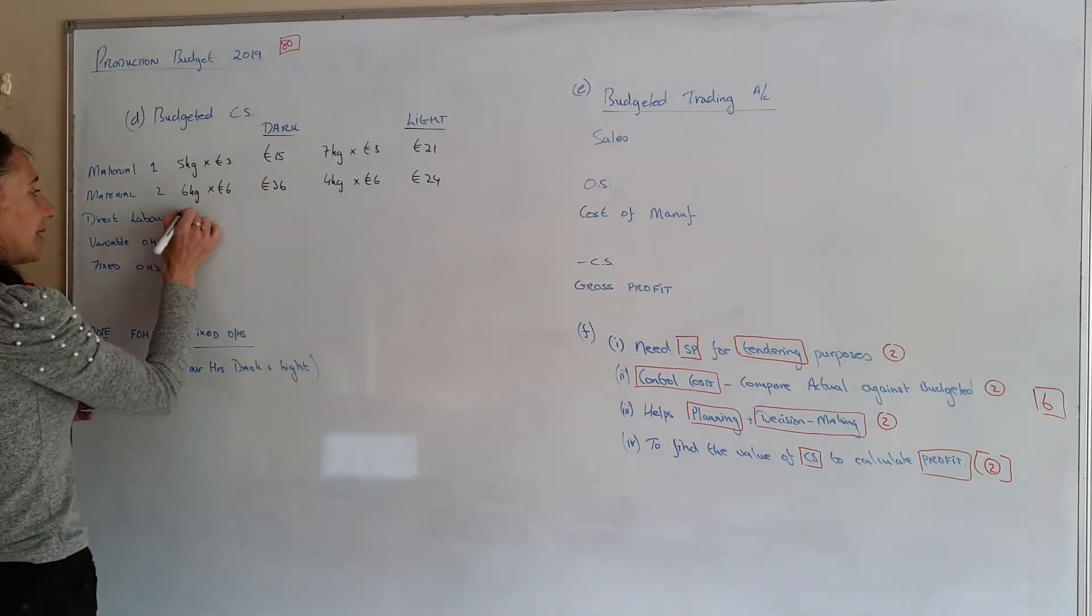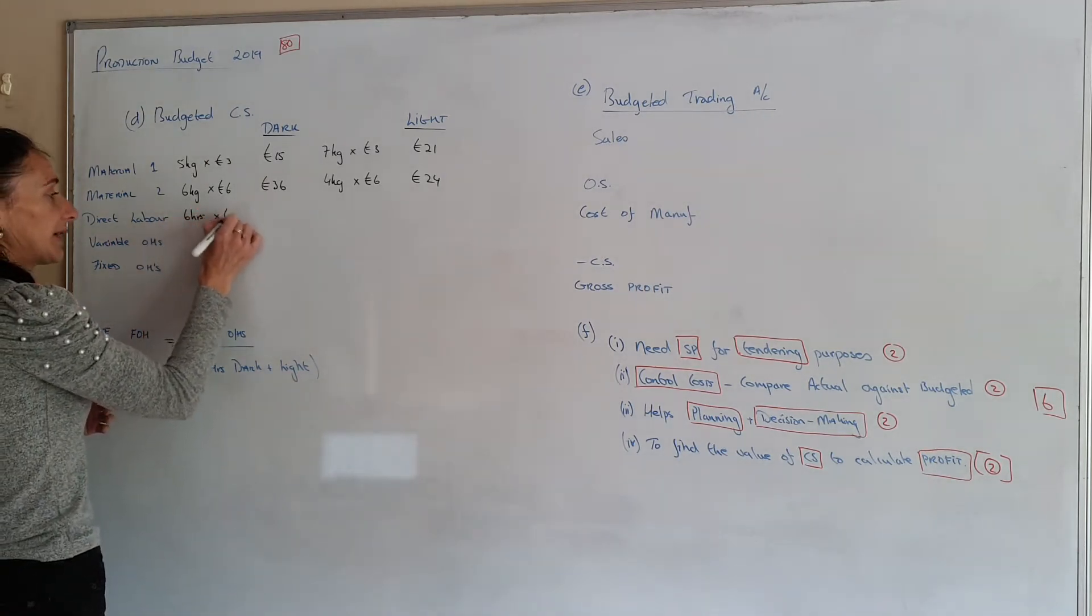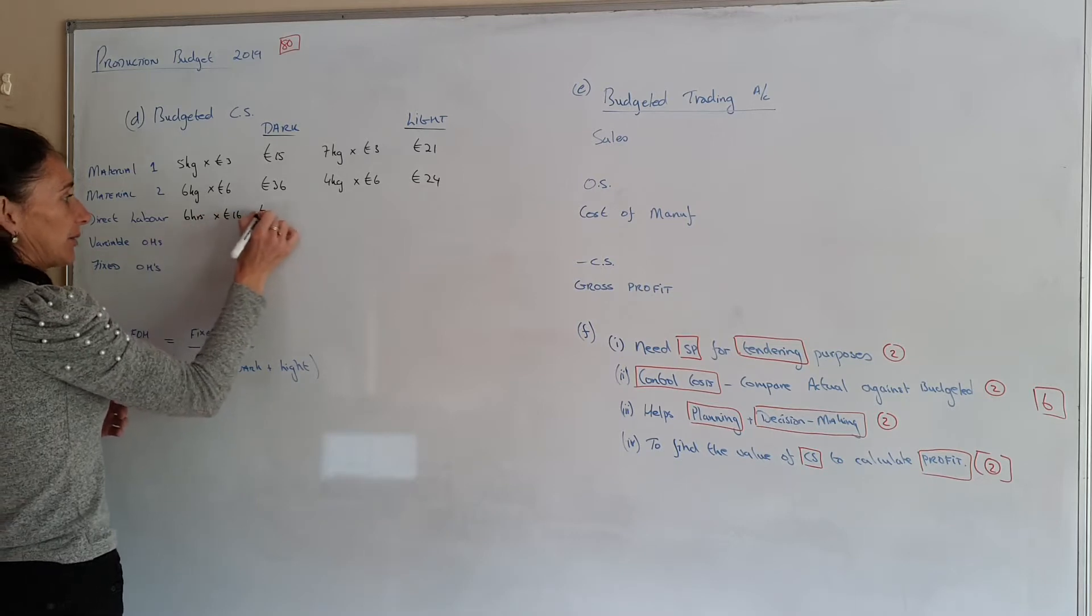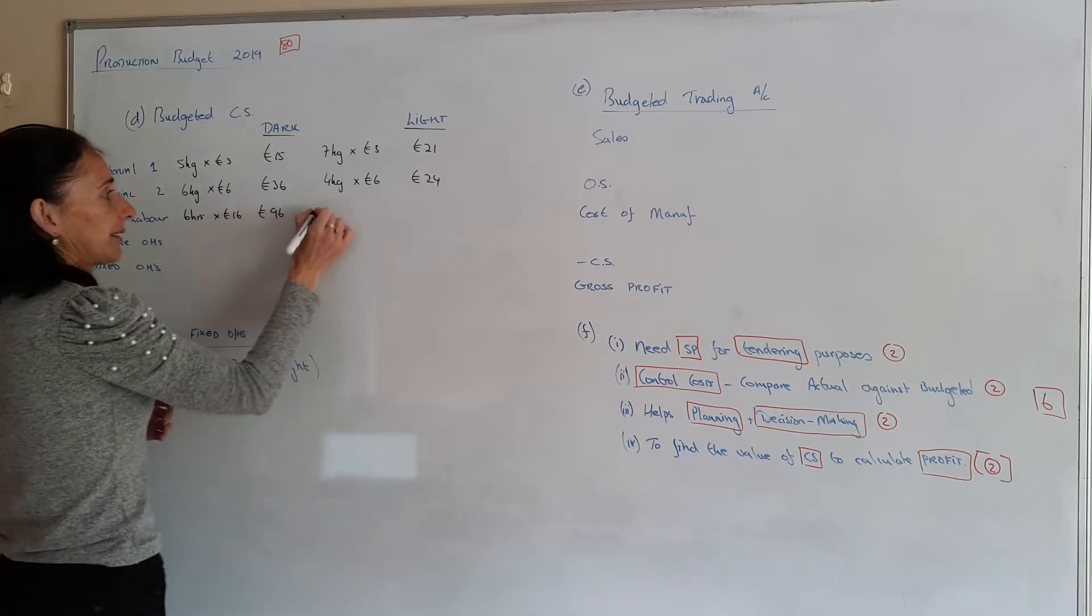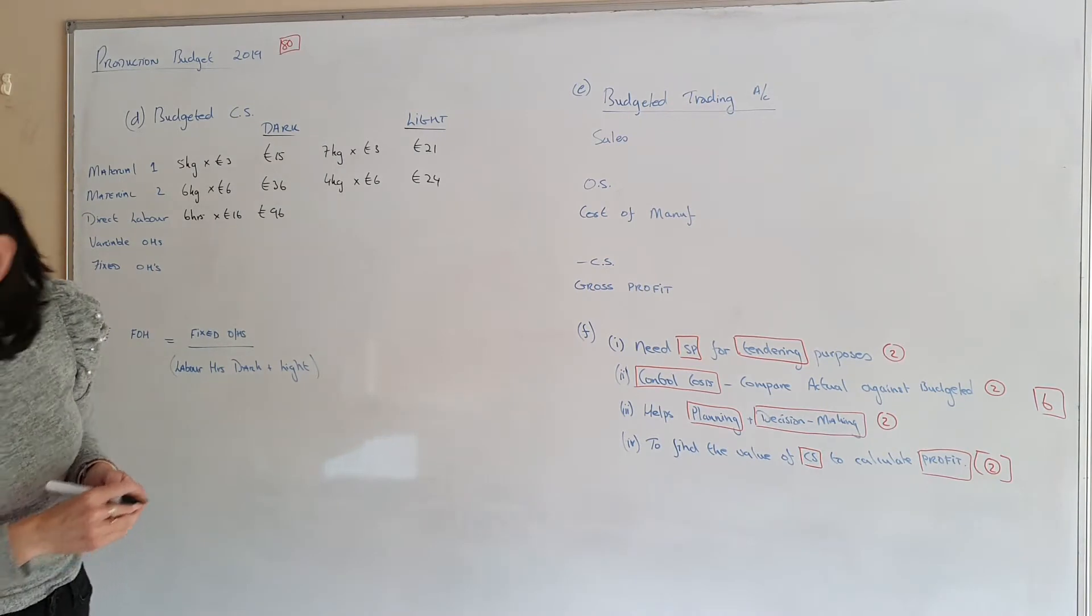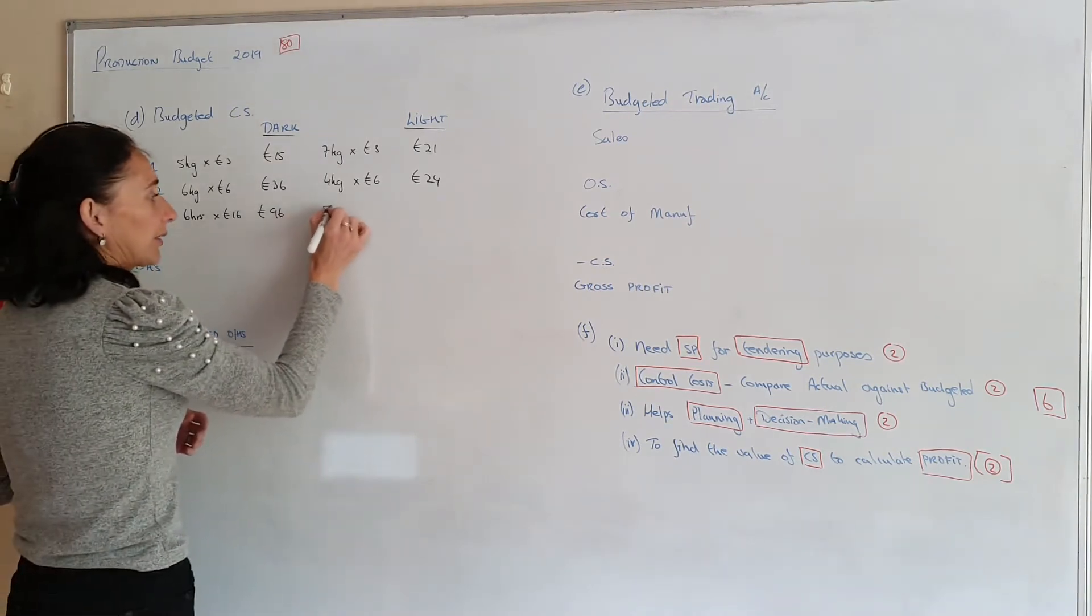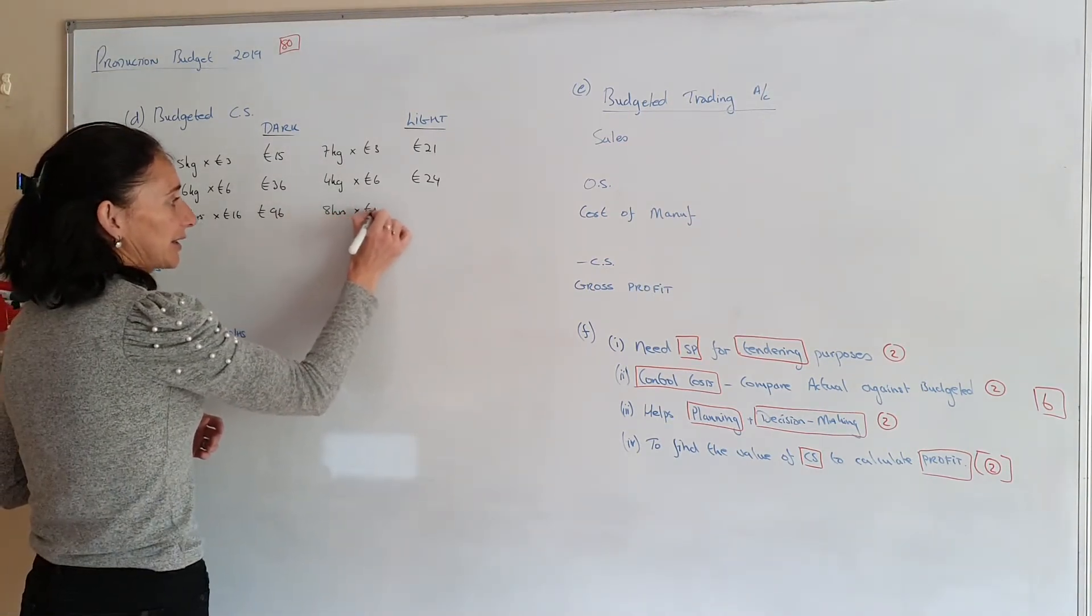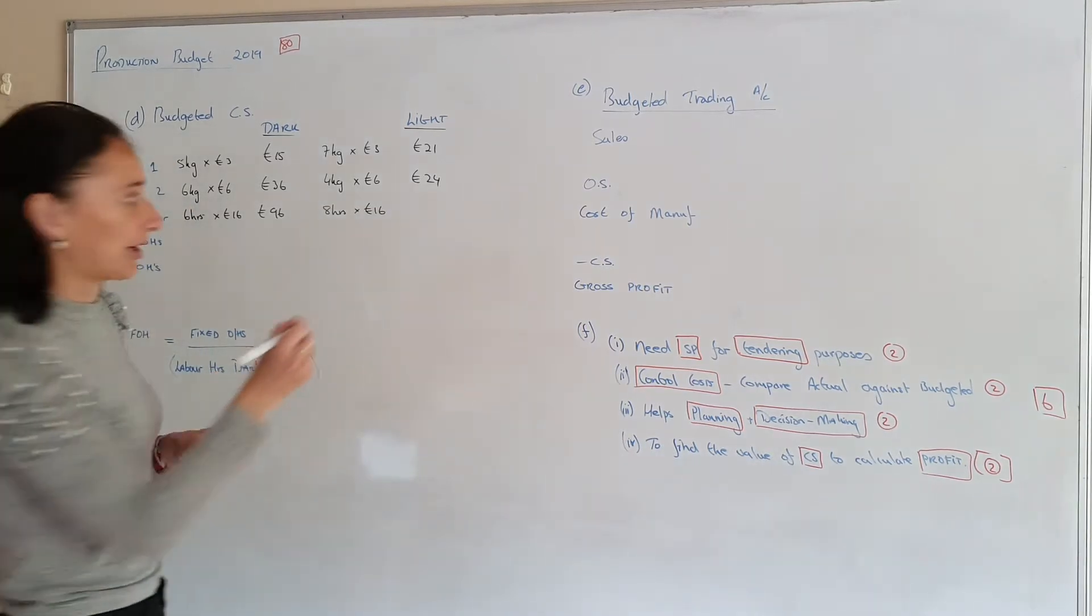So I'm going to use 6 hours for working on one unit at €16 which would be €96. And for light I'm going to work 8 hours at €16. And that's going to cost me €128.